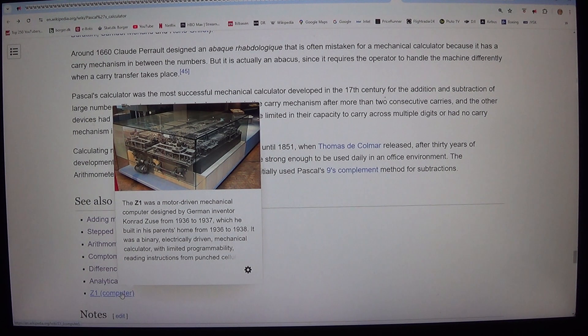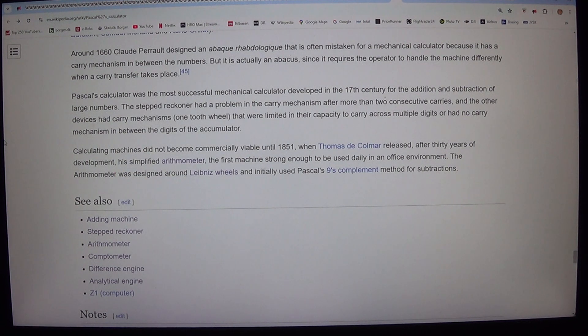Pascal's calculator was the most successful mechanical calculator developed in the 17th century for the addition and subtraction of large numbers. The stepped reckoner had a problem in the carry mechanism after more than two consecutive carries, and the other devices had carry mechanisms, one tooth wheel, that were limited in their capacity to carry across multiple digits or had no carry mechanism in between the digits of the accumulator.